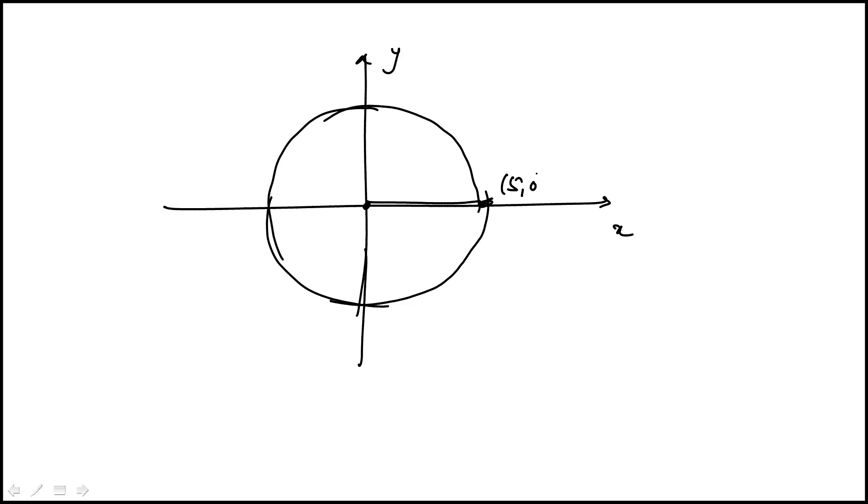And here this would be (5, 0), (0, 5). You don't have to label all this but just doing it to kind of make this visualization clear.